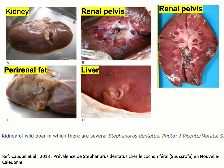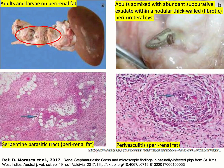Looking at images from a referenced paper: in the first picture you can see adult parasites in the kidney and renal pelvis. Stefanurus dentatus adult parasites are also found in the perirenal fat of the kidney. One image shows an immature stage of Stefanurus dentatus located in the liver parenchyma, where the color of the liver becomes very pale — possibly the patchy liver discussed earlier.